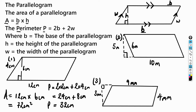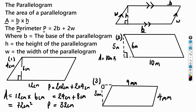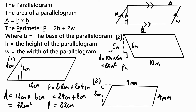For the second question, we need to find the area and the perimeter. The area equals the base times the height: 10 meters times the perpendicular height of 5 meters, giving us 50 meters squared.